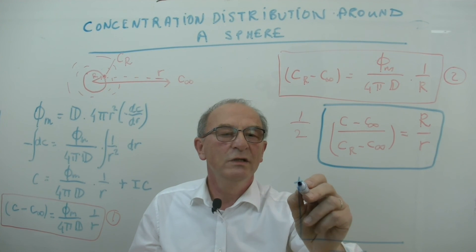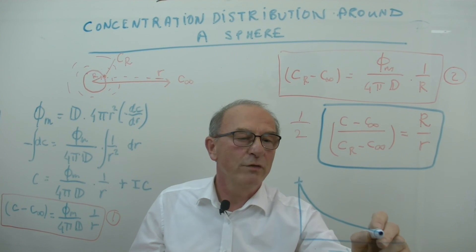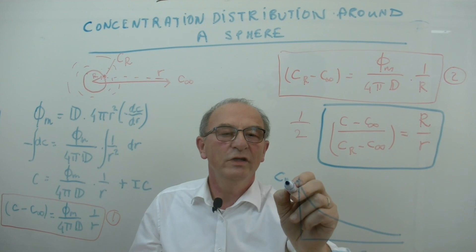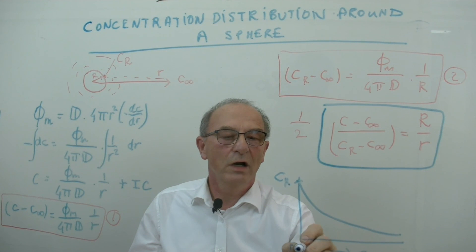we will see that it will have 1 over R relationship, starting with, of course, cR, because here R is R.